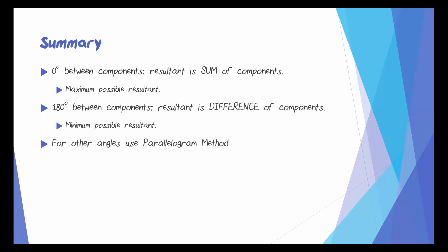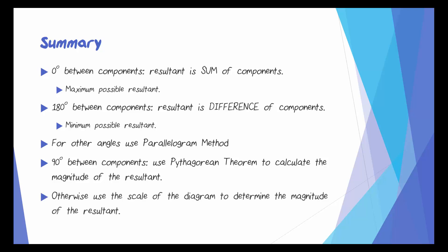At other angles, we'll use the parallelogram method. When the angle is 90 degrees, we can use the Pythagorean theorem to calculate the magnitude of the resultant. We can't use this for any other angle, so in those cases, we'll use the scale of the diagram to determine the magnitude of the resultant.